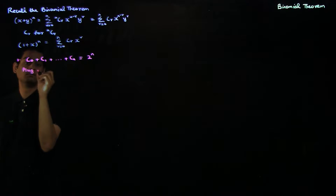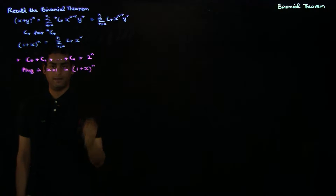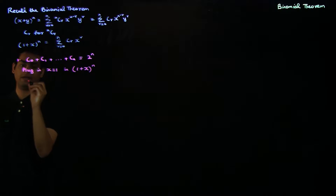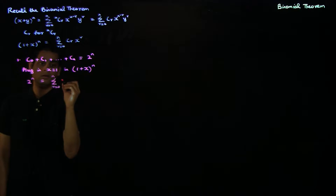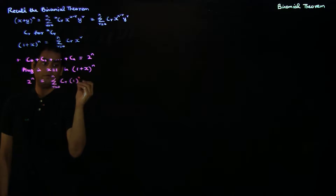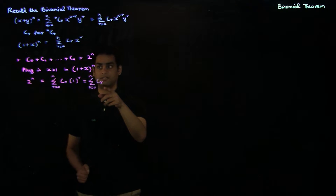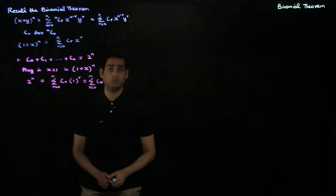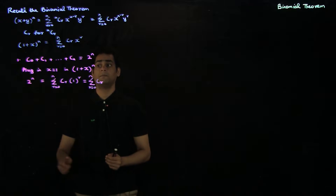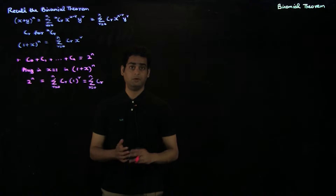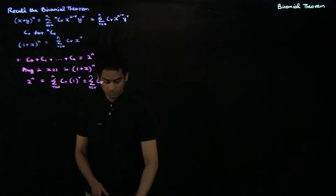We plug in x = 1 in (1 + x)^n. The left-hand side gives us 2^n, since x is 1. The right-hand side gives us summation r equals 0 to n, cr times 1^r, which is nothing but summation r equals 0 to n, cr — that is c0 + c1 + ... + cn. So the left-hand side is 2^n, which is what we wanted to show. The trick was to find an expansion where the coefficients are the terms we want to sum, then plug in a value for x to get a closed form.